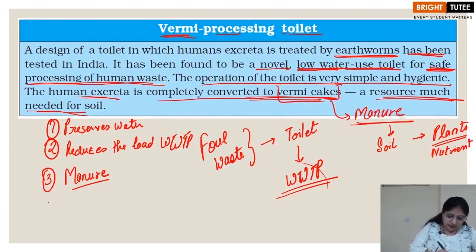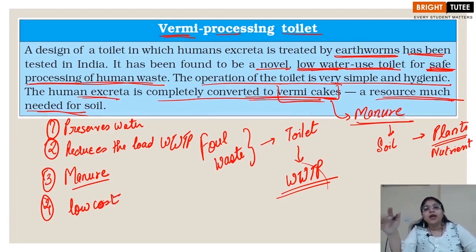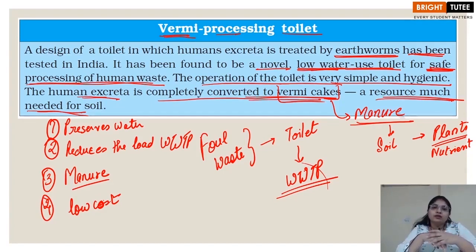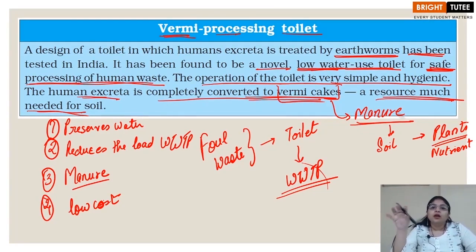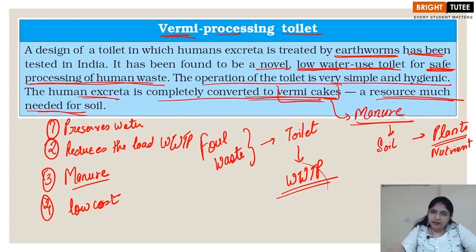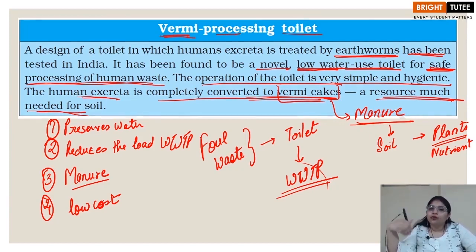Another advantage of the vermi processing toilet is that it is a low-cost setup, which makes it especially practical for villages in India where complicated sewage systems are unavailable. Open defecation is common in rural areas, and introducing vermi processing toilets helps maintain cleanliness and achieves the goal of reducing open defecation. This process is simple, hygienic, and beneficial both for sanitation and agricultural purposes.